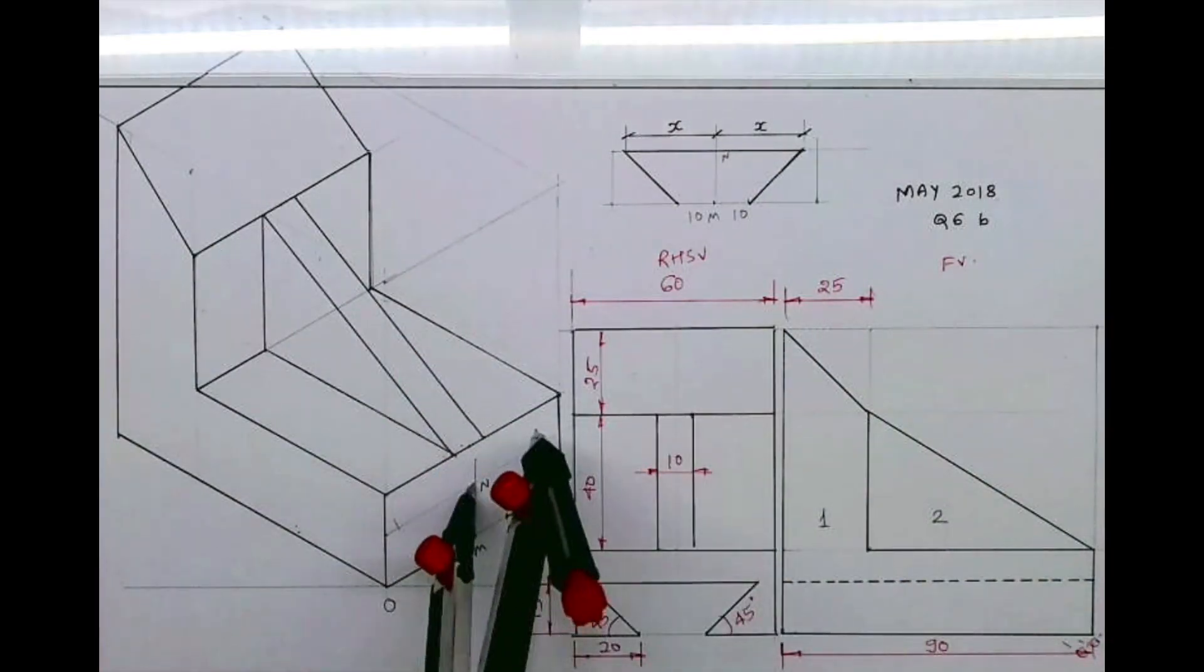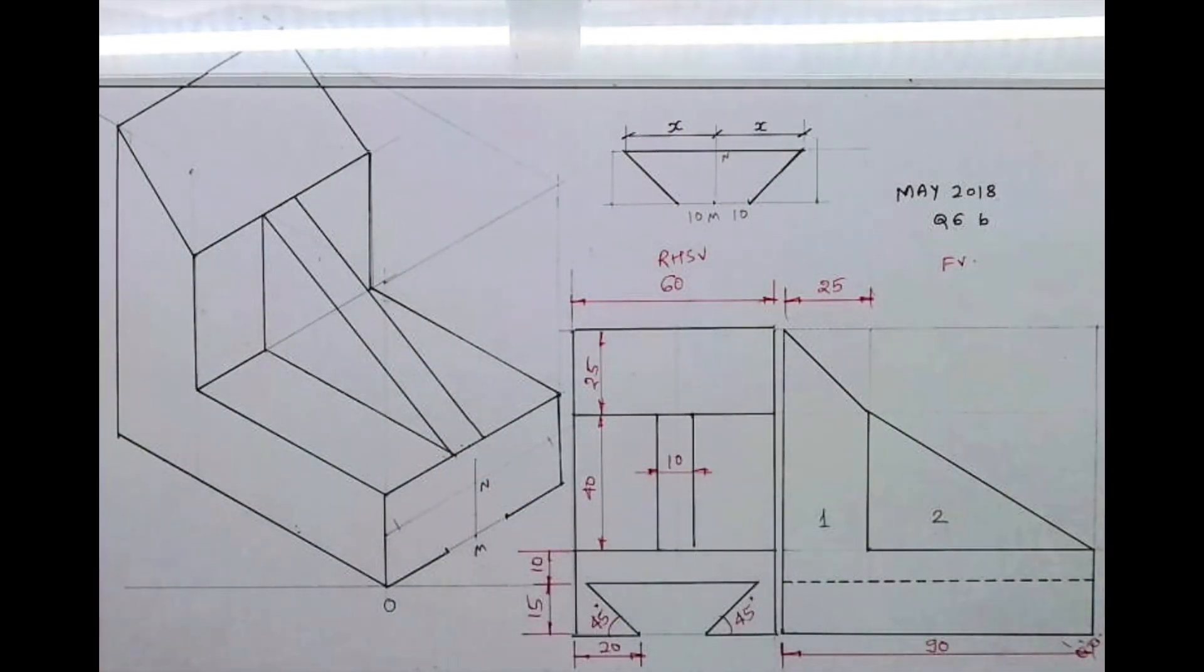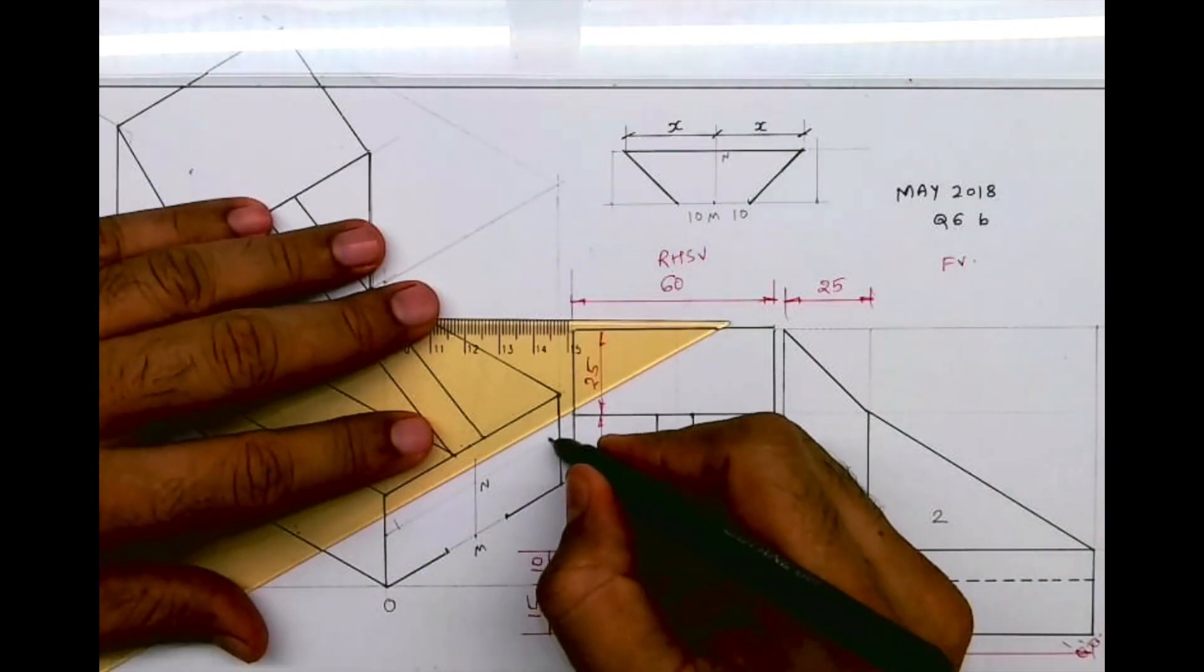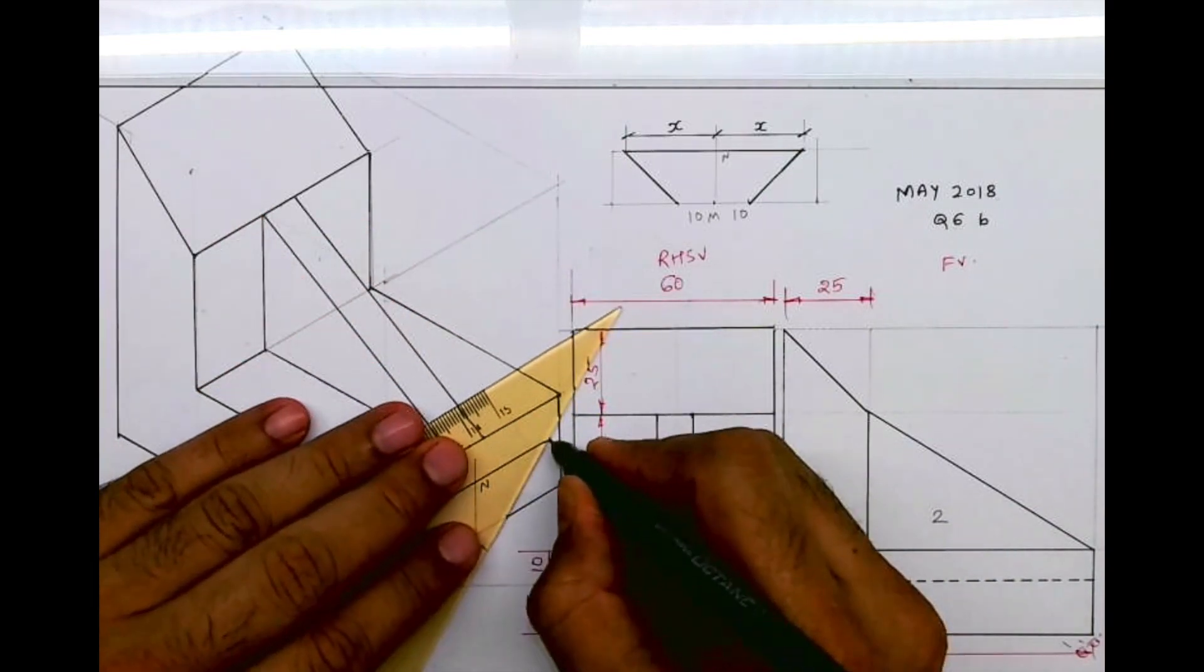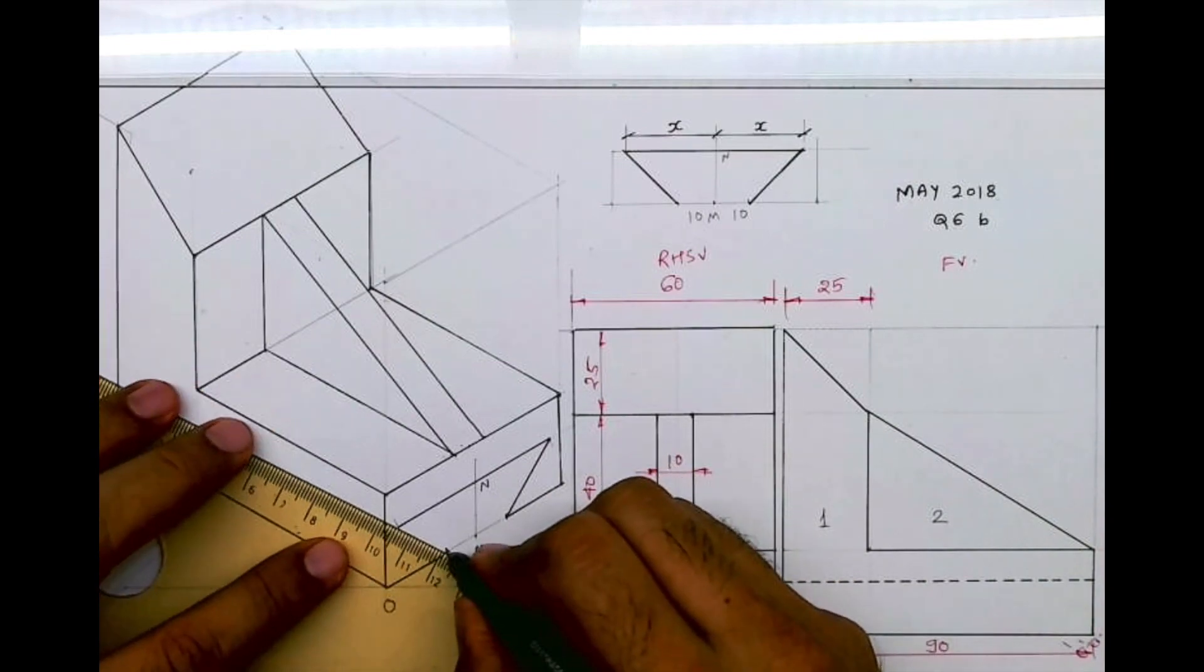Always remember, whenever there is an angle in isometric, you need to draw it outside and you have to transfer linear distance. So draw it outside, find out x and y coordinates, and you transfer those points.